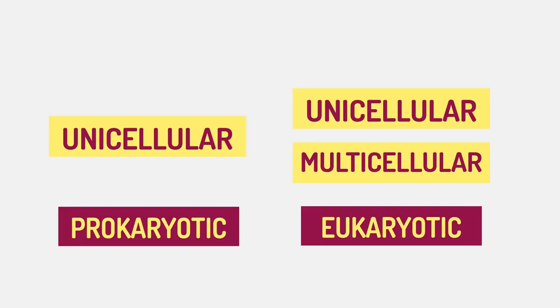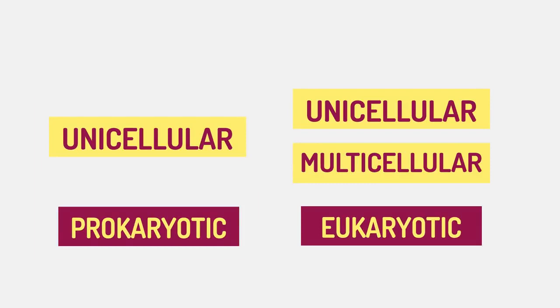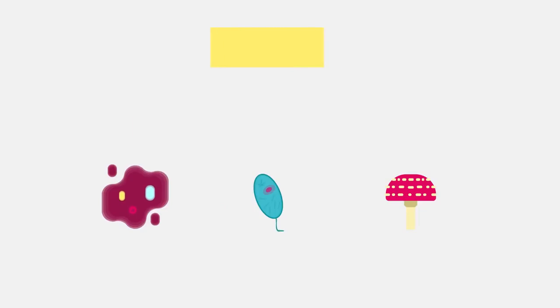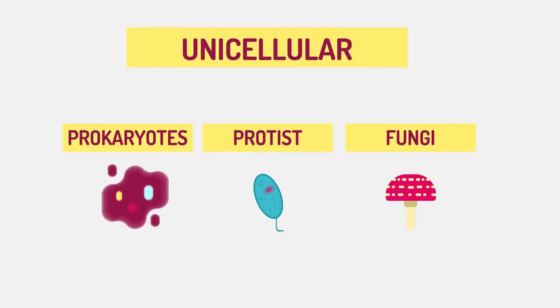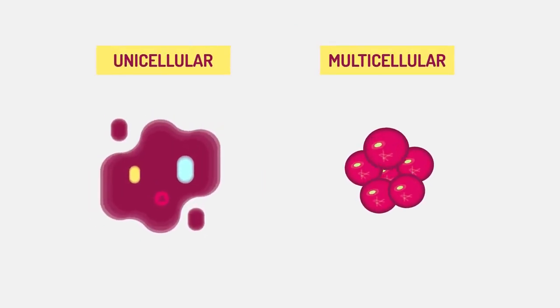Eukaryotes can be uni or multicellular organisms. We'll look at the difference between prokaryotes and eukaryotes in this video, and we'll discover why the statement that all prokaryotes are unicellular is contended by some scientists. Most protists and some fungi like yeast are also unicellular.